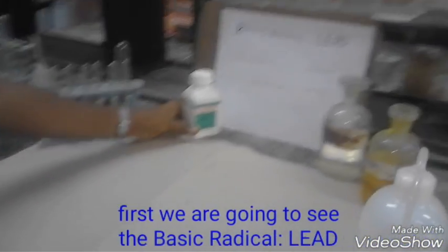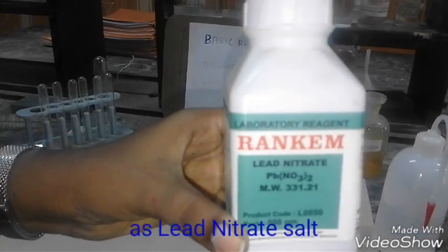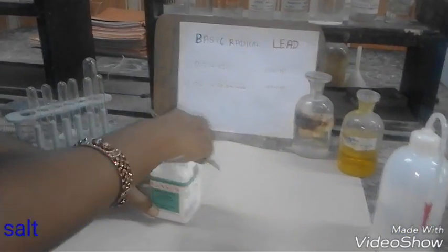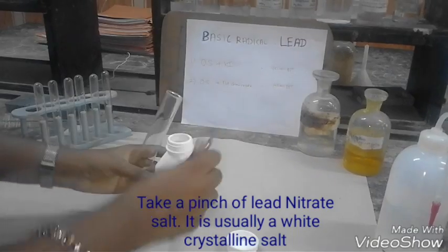Now we are going to see the confirmatory test for basic radical using the salt lead nitrate. It is usually white crystalline in nature. Here the given basic radical is lead.